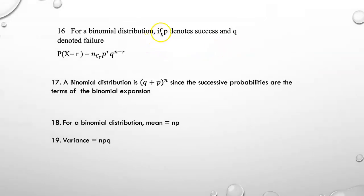For a binomial distribution, if P denotes success and Q denotes failure, probability that X equal to r is given by nCr P raise to r Q raise to n minus r. A binomial distribution is defined as Q plus P whole raise to n since the successive probabilities are the terms of the binomial expansion. Probability that X equal to 1 will be nC1 P raise to 1 Q raise to n minus 1 and so on.